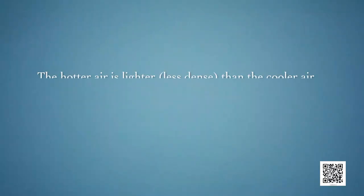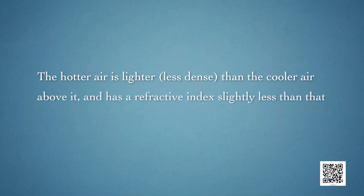The air just above the fire becomes hotter than the air further up. The hot air is lighter and less dense than the cooler air just above it, and has a refractive index slightly less than that of the cooler air. Since the physical conditions of air are not stationary, the apparent position of the object as seen through the hot air fluctuates.